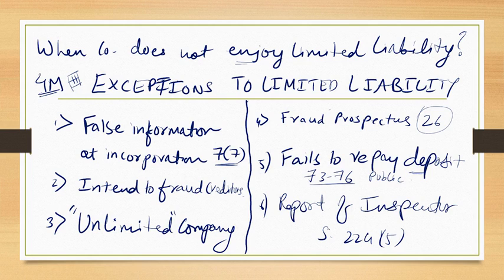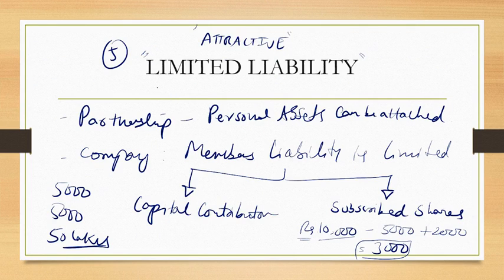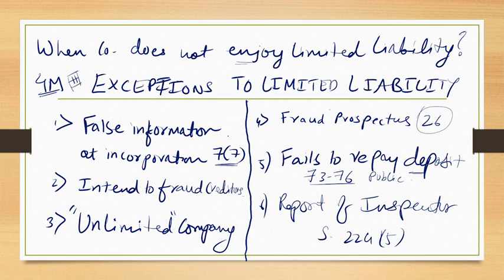The sixth exception is if the report of the inspector under Section 224 sub-section 5 suggests that the company's liability should be made unlimited due to fraud or misrepresentation. The general rule is limited liability — members' liability is limited to their capital contribution or to the subscribed amount. Only the balance not yet paid is their maximum liability, but if these six cases happen, the liability becomes unlimited.